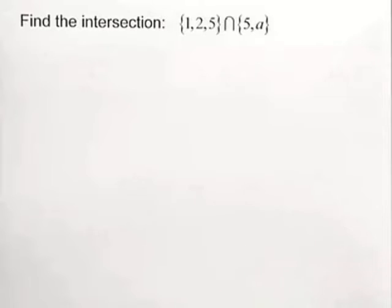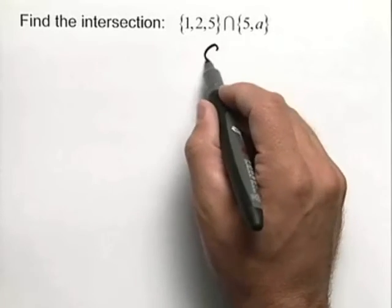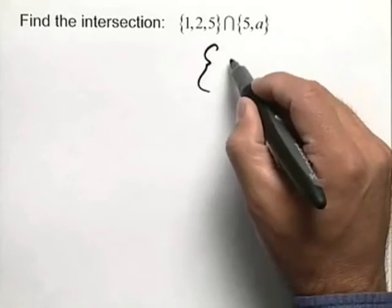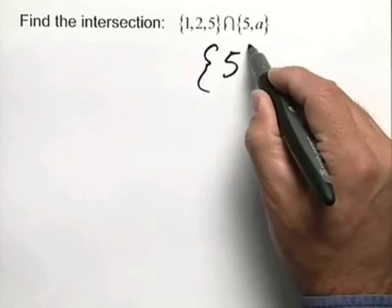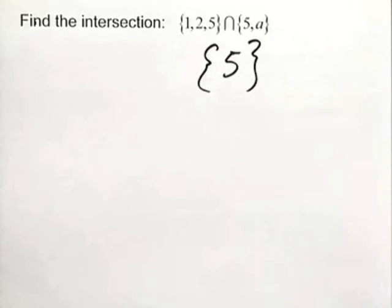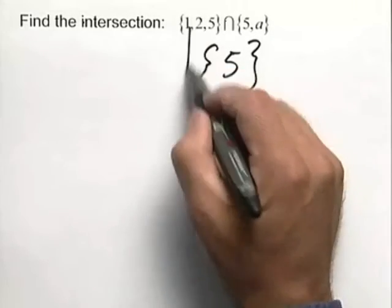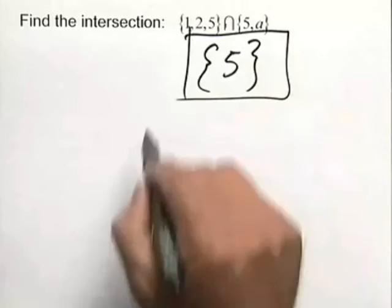The intersection is an operation that includes what's in common between the two sets. And in this case, the only thing that's in common is the element 5. So that is the intersection of these two particular sets.